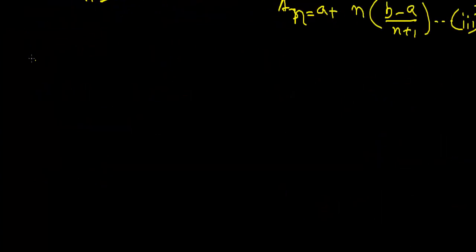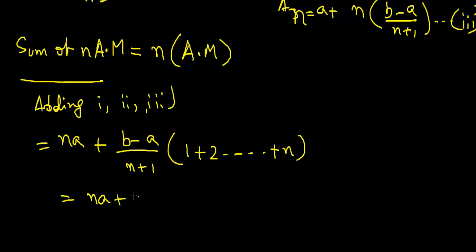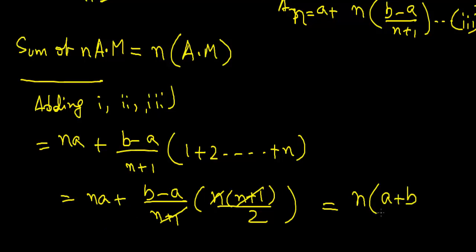If we add all of this, sum of N arithmetic means will be equals to N multiplied by... Adding equation 1, 2 and 3, we see that Na plus (b minus a) will be common, and this will be 1 plus 2 and up to N. This will be Na plus [(b minus a)/(n plus 1)] times [n(n plus 1)/2]. This cancels out and we will get the final answer as N(a plus b)/2.